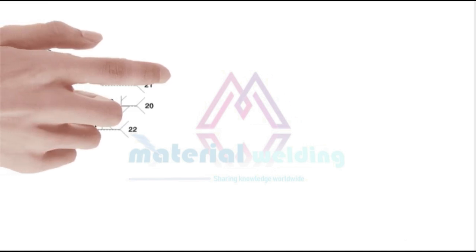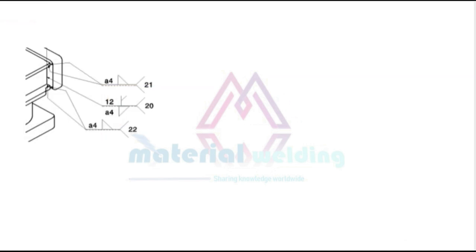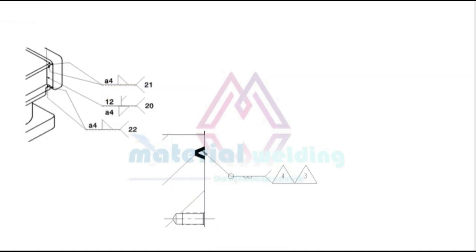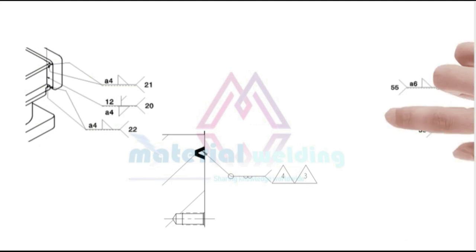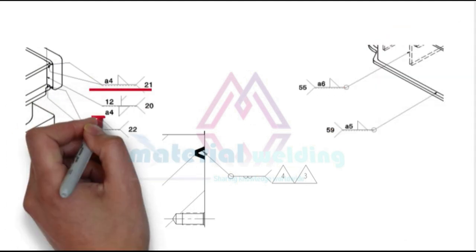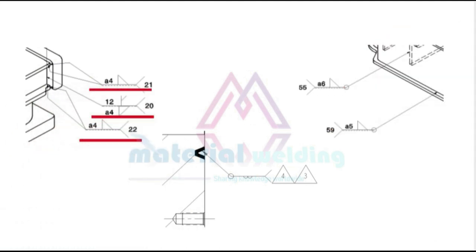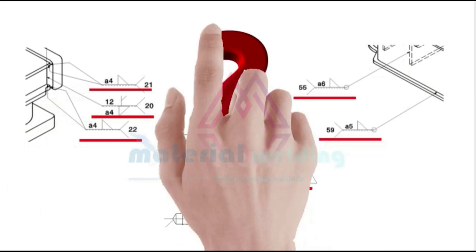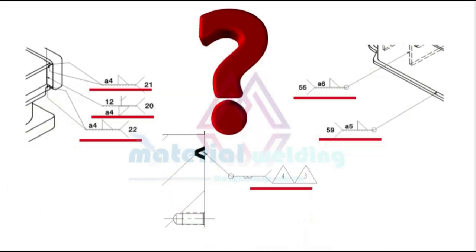You will observe many different types of welding symbols on the fabrication drawing, such as fillet weld, butt weld, or corner weld. Let's watch and learn this interactive training video to make you an expert in welding symbols today.